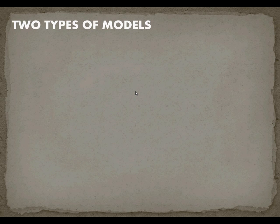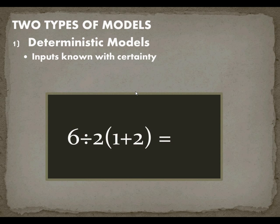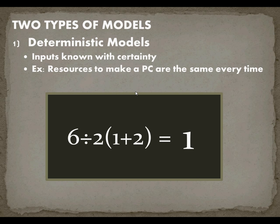There are two major types of models. The first are deterministic models, which you're very used to using most likely. The inputs are known with certainty, and these are the math problems you've been doing since childhood. So 6 divided by 2 times the quantity of 1 plus 2 is going to yield the same answer every time, and that should be 1. In the business world, the resources to make a PC are the same every time. If I'm producing a PC with one hard drive, it should only use one hard drive as input.